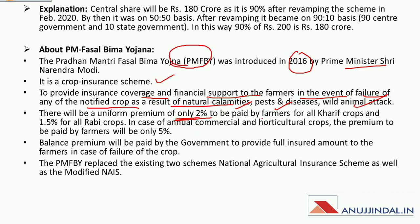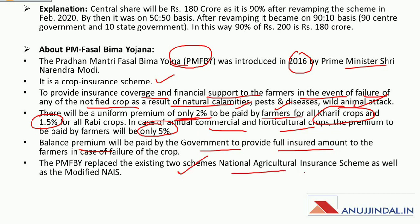Under PM Fasal Bima Yojana, the uniform premium to be paid by farmers is 2 percent for Kharif crops, 1.5 percent for Rabi crops, and 5 percent for annual commercial and horticulture crops. The balance premium is paid by the government to provide the full insured amount to farmers. This scheme replaced two existing schemes: NAIS (National Agricultural Insurance Scheme) and Modified NAIS.